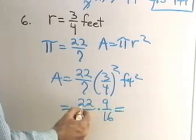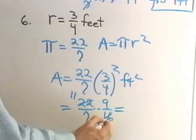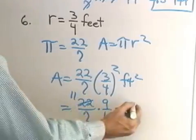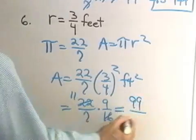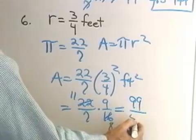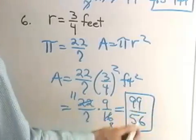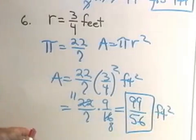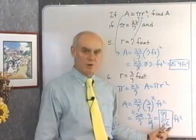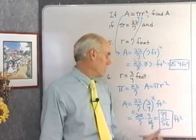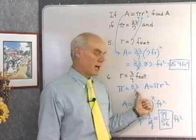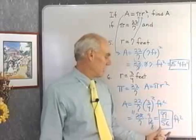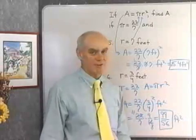And what have I got here? A common factor of 2. So that's 11 and 8 divides in there. Anything else? No. So 11 times 9 is 99, and then 8 times 7 is 56. So 99 over 56 square feet, and I could change that if I wanted to into an improper fraction also, but I think I'll just leave it right there. So if π is equal to 22 7ths, and my radius is 3 quarters of a foot, then I end up with an area of 99 over 56 square feet.